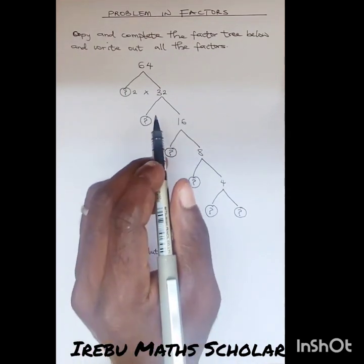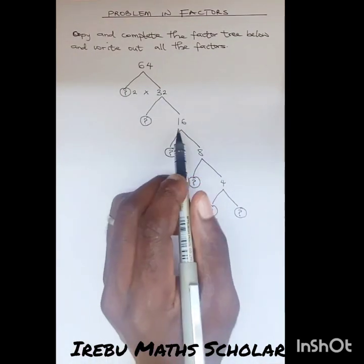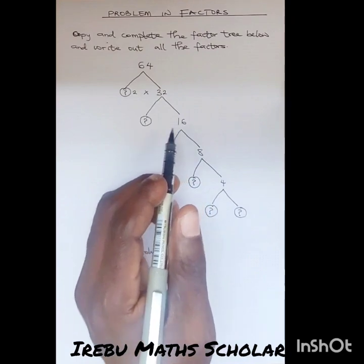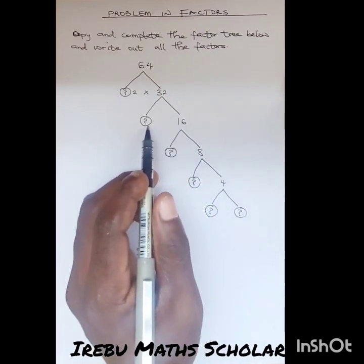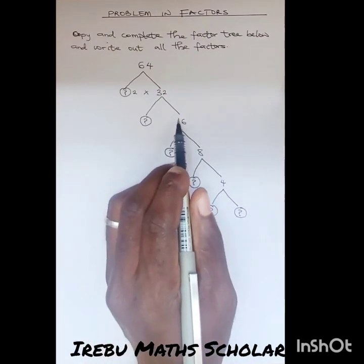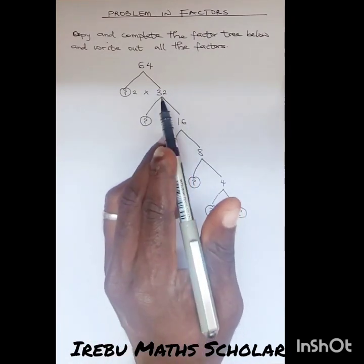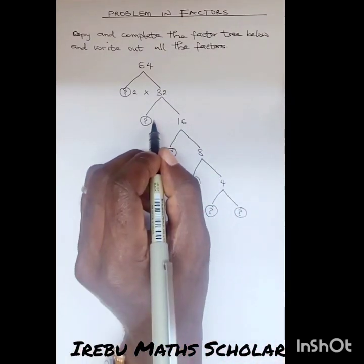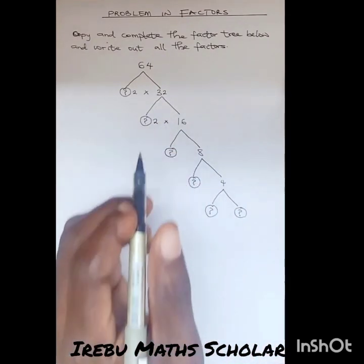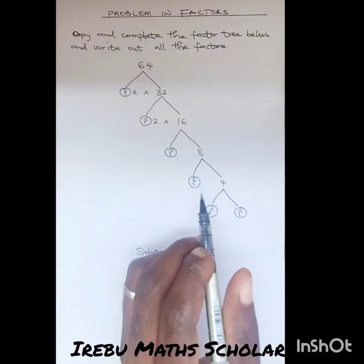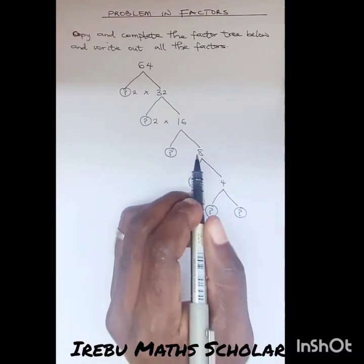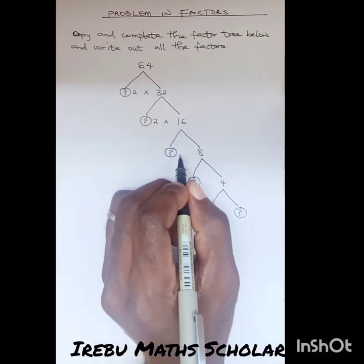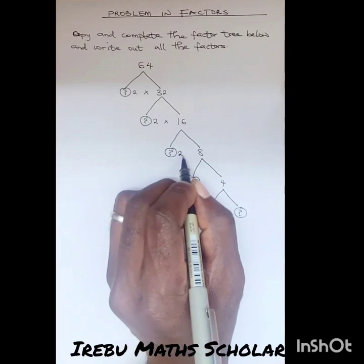We also have another one here. This is 32 and they've given this place to be 16. So in order for us to know what will be here, we have to multiply 16 by a certain number to give us 32. And that number is definitely going to be 2. The next one is, what are you going to multiply 8 by to give us 16? No doubt, it's going to be 2.